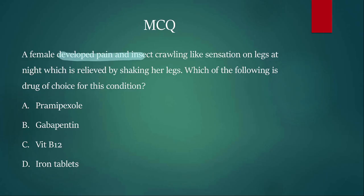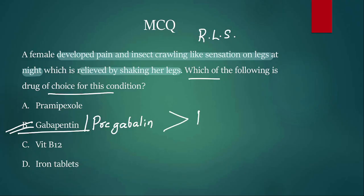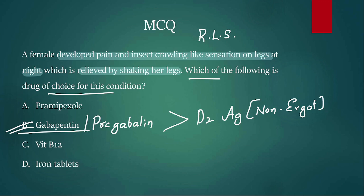MCQ 5: A female developed pain and itching/crawling sensation in her legs at night, relieved by shaking her legs — this is restless leg syndrome. The drug of choice is gabapentin or pregabalin. If those are not in the options, use non-ergot D2 agonists.